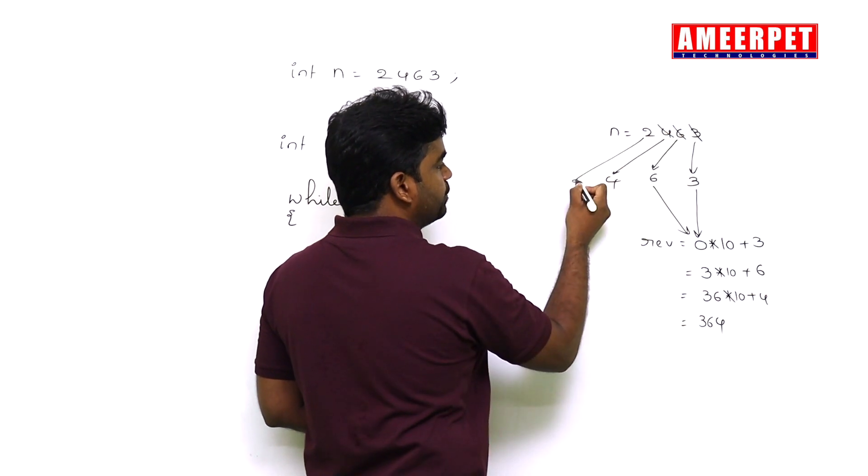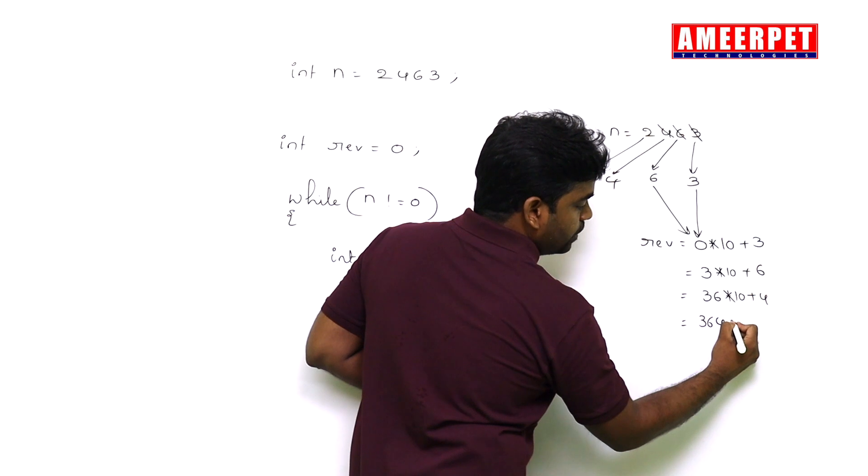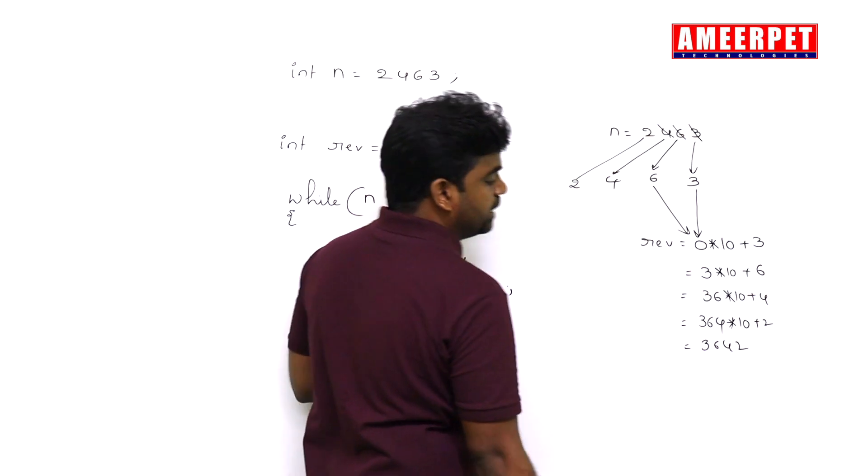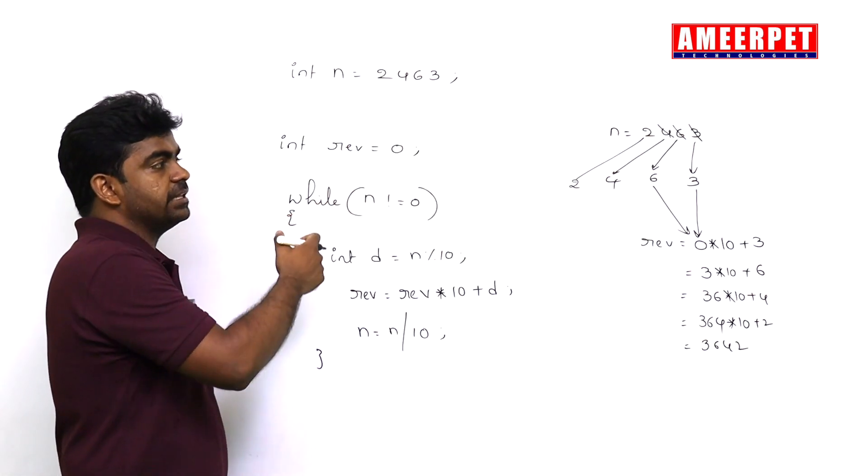So next digit will come, 2. Now here into 10 means what? 10 plus 2, that is 364, that is the reverse number for the given number.